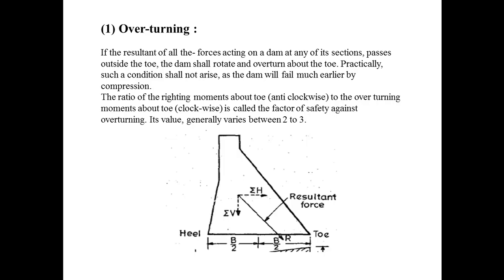Coming to the first topic, failure due to overturning. If the resultant of all the forces acting on a dam at any of its sections passes outside the toe, the dam shall rotate and overturn about the toe. Practically such a condition shall not arise as the dam will fail much earlier by compression.